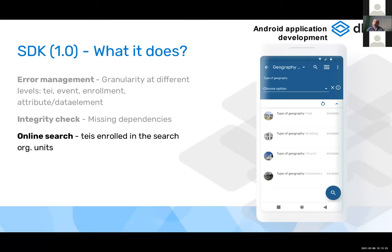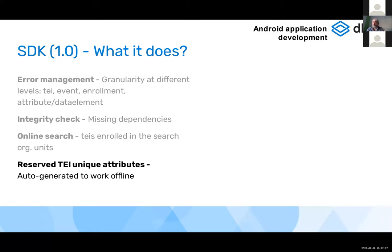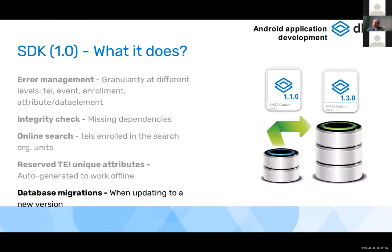Online search is supported whenever the device is connected to the internet, using the org unit tree search. For unique attributes, if the Android user is going to be offline for days or weeks, these are stored in the local database so you don't need to call the API every time.